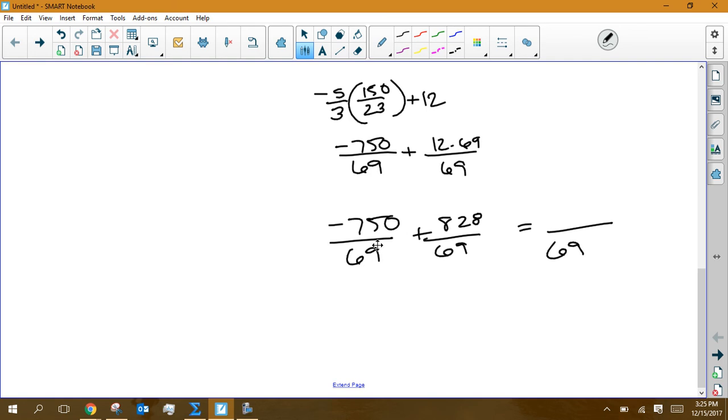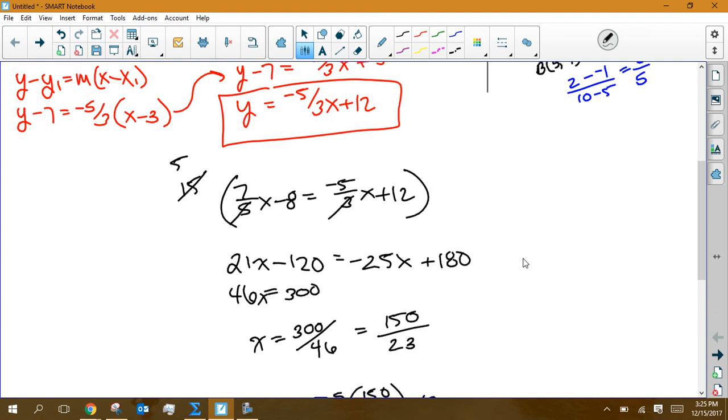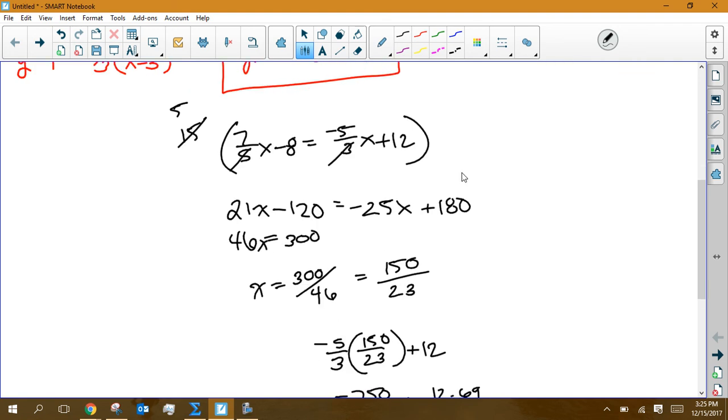So negative 750 plus 828 should be 78. So we get 78 over 69. Now 78 over 69 reduces. There's a factor of 3 in each of those. So that gives me 26 over 23. And that's the Y value then of those two things intersecting. So my location of my orthocenter.